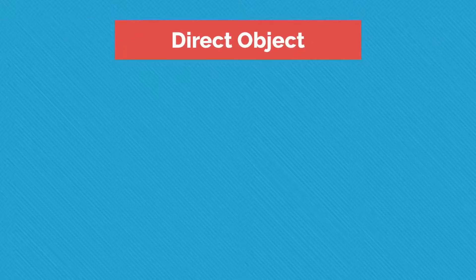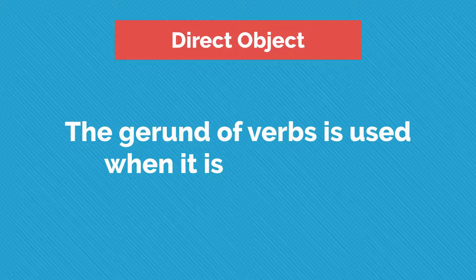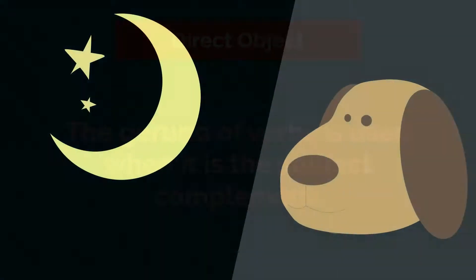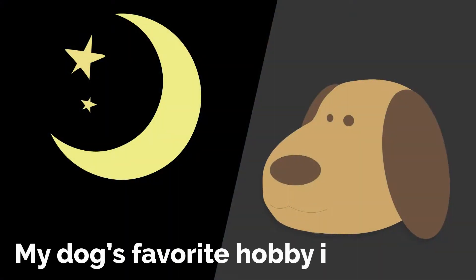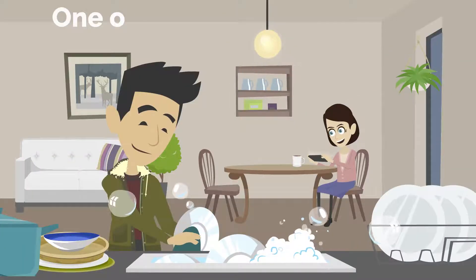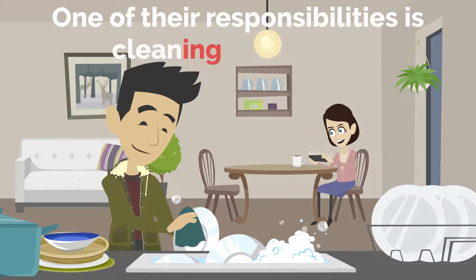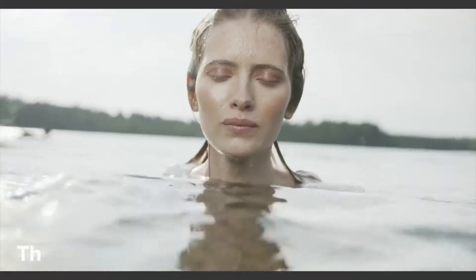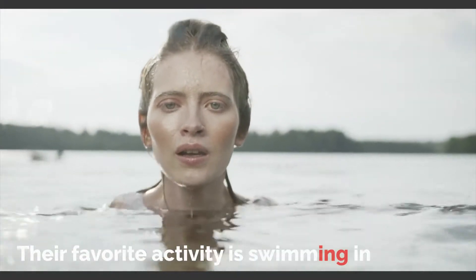The gerund form of verbs is used when it is the subject complement. For example: My dog's favorite hobby is sleeping. One of their responsibilities is cleaning the dishes. Their favorite activity is swimming in the lake.